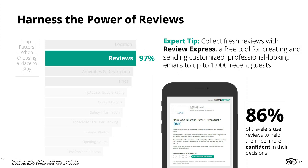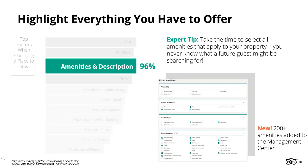Simply customize and save your email template and then blast out an email to up to 1,000 recent guests. On to the third aspect of your listing: amenities. Though amenities aren't the number one factor when choosing a place to stay, they're still very high at number three. TripAdvisor has hundreds of amenities for you to choose from in the management center — we've just added another 200 more. Many travelers filter by amenities or search for specific keywords, so if you haven't confirmed your amenities, now is a great time. When writing a description, focus on the uniqueness of the guest experience — sound genuine rather than formal or robotic.